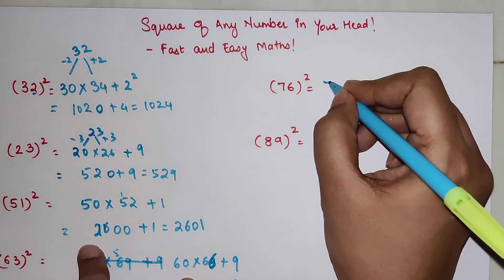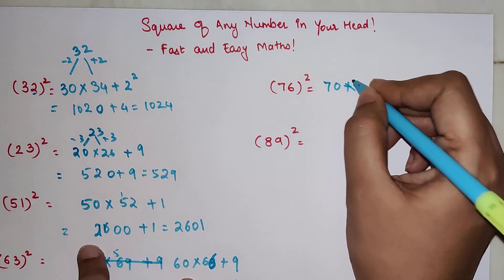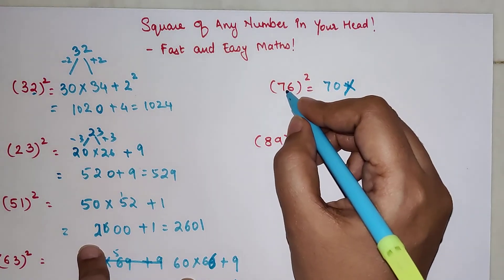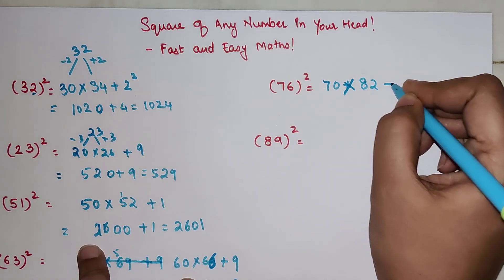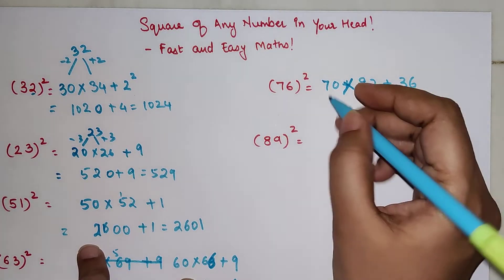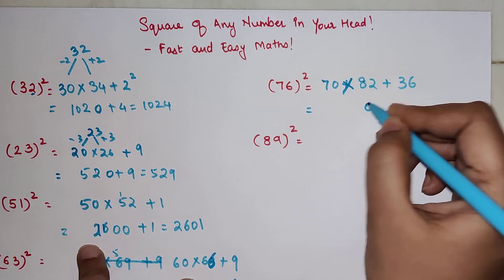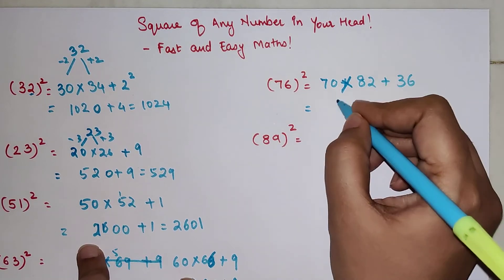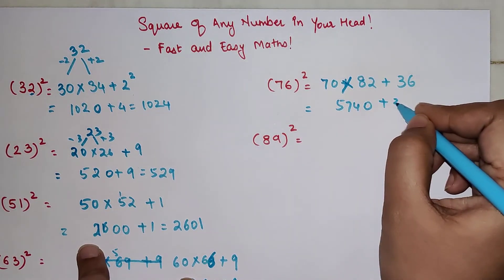This is 70 into, now 76 plus 6, so that gets you 82, and 6 square is 36. So this is going to be 0, then 14, 1 carry, 5740 plus 36 gets you 5776. So that is your answer for 76 square.